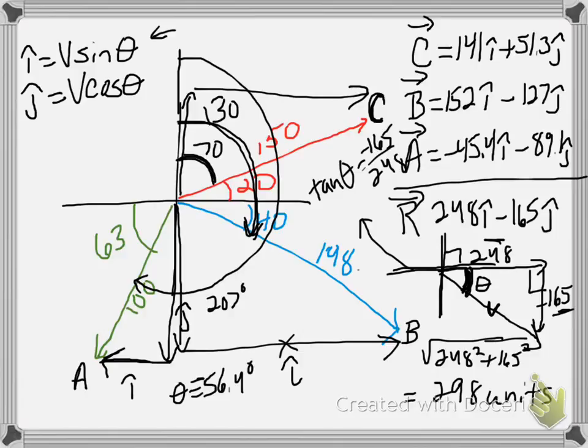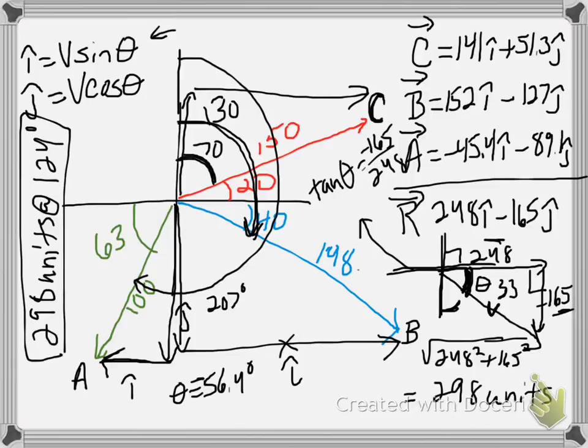Because earlier I was doing this, I went down 165 and over, and I figured out this angle instead. So that would have been tangent of the angle. It would have been 248 over 165. It would have been flipped. Okay, so this angle in here is 33 degrees. And if I add that on to 90, basically it's 298 units at basically about 124 degrees. About 124 degrees is where that is.